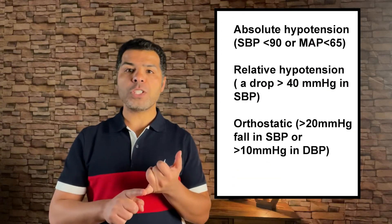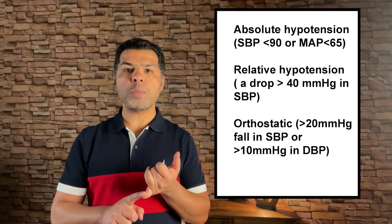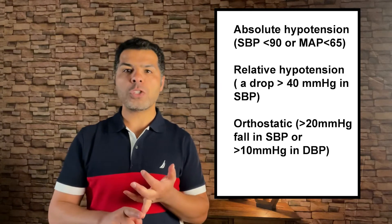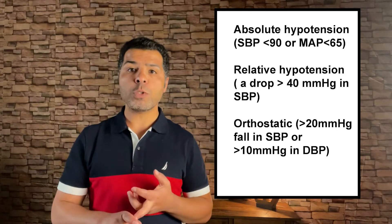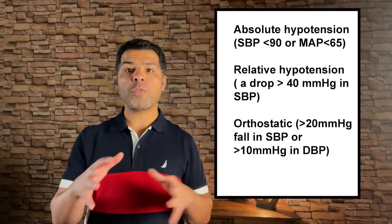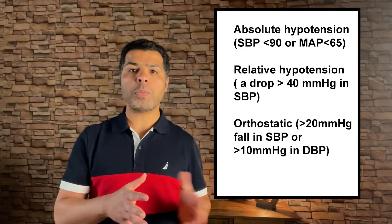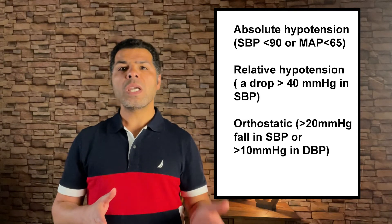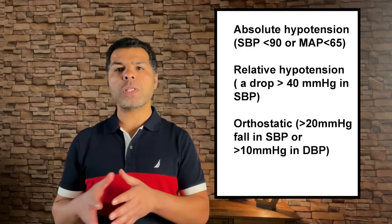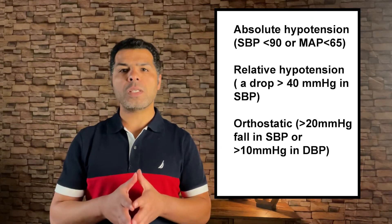First, what's the definition of low blood pressure or hypotension? In the literature, absolute hypotension is defined as systolic blood pressure less than 90 mmHg or mean arterial blood pressure less than 65. Relative hypotension is a drop of more than 40 mmHg in systolic blood pressure, or orthostatic hypotension is a drop of more than 20 mmHg in systolic blood pressure.